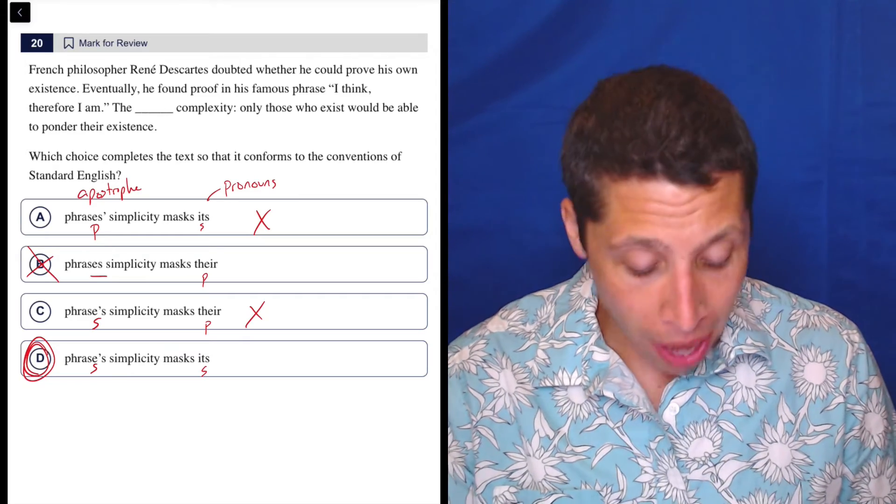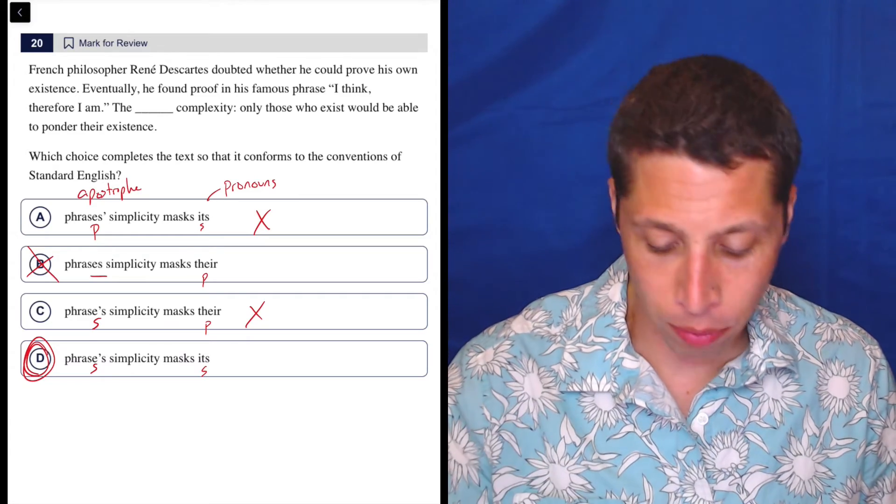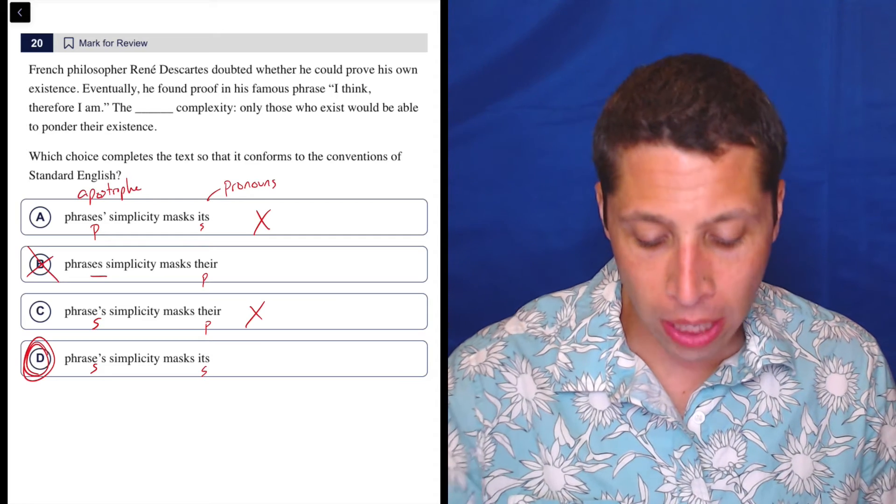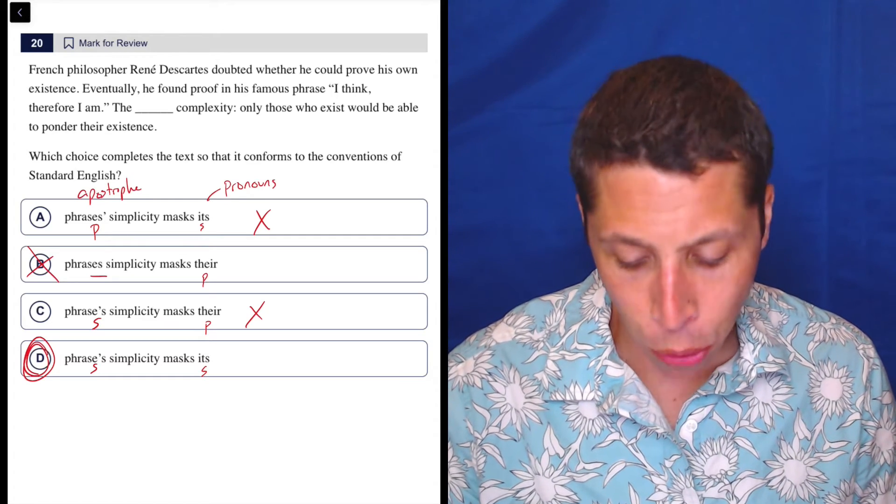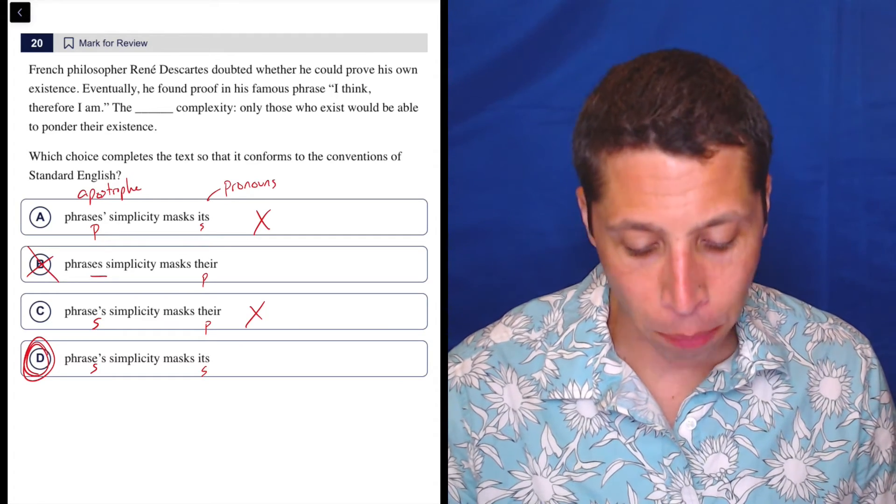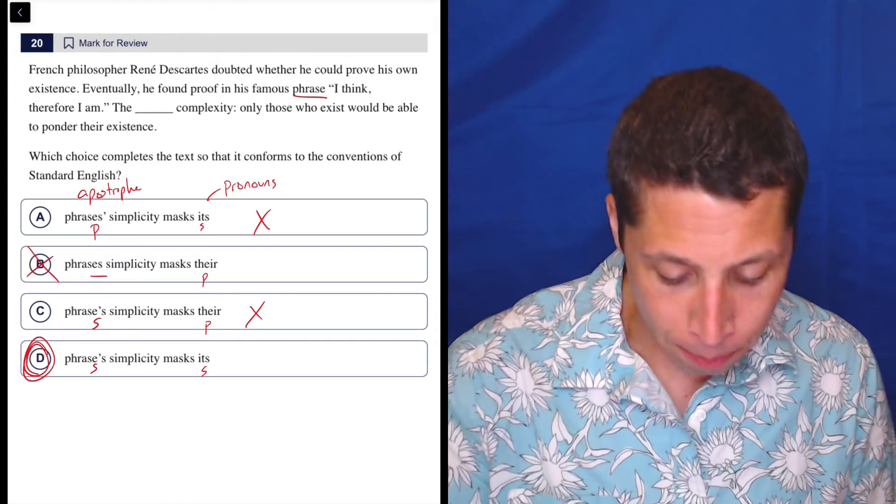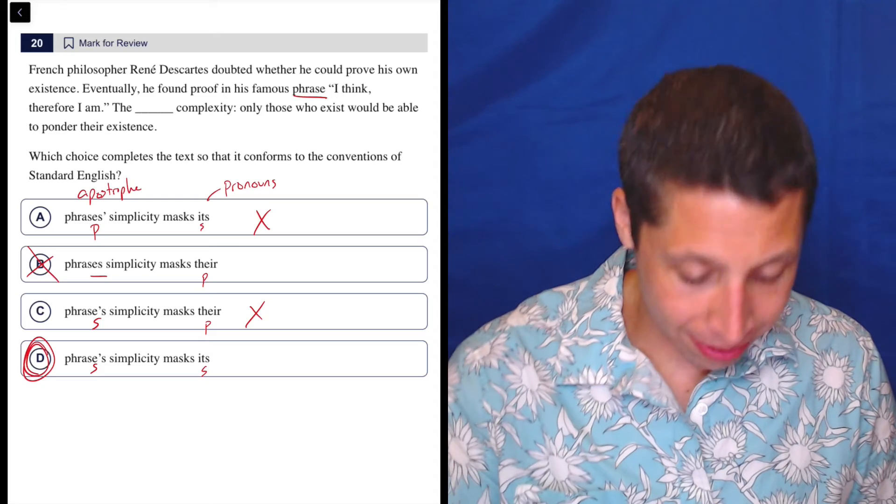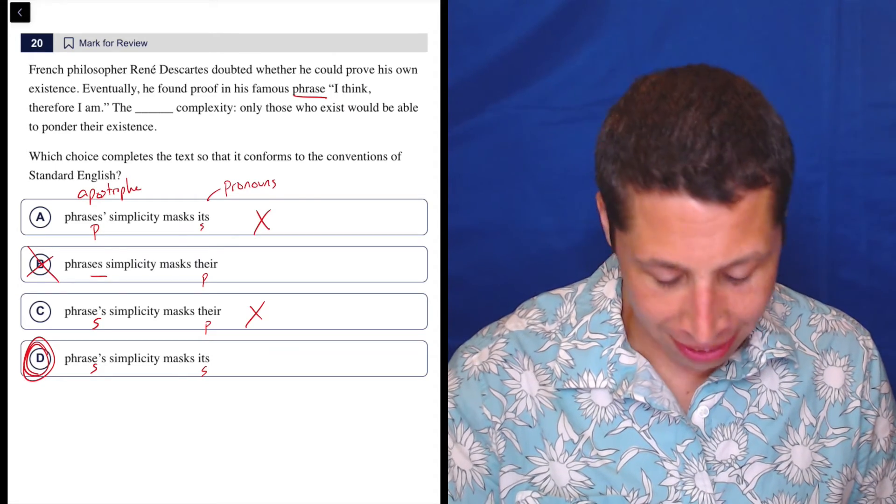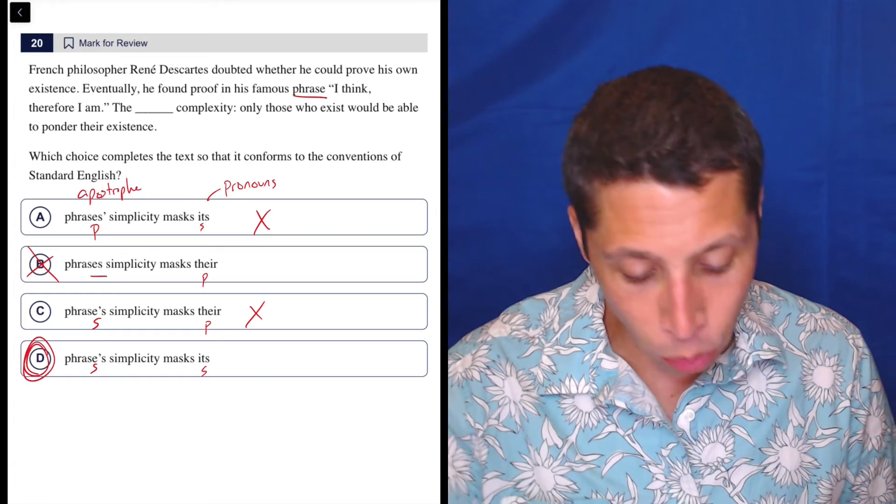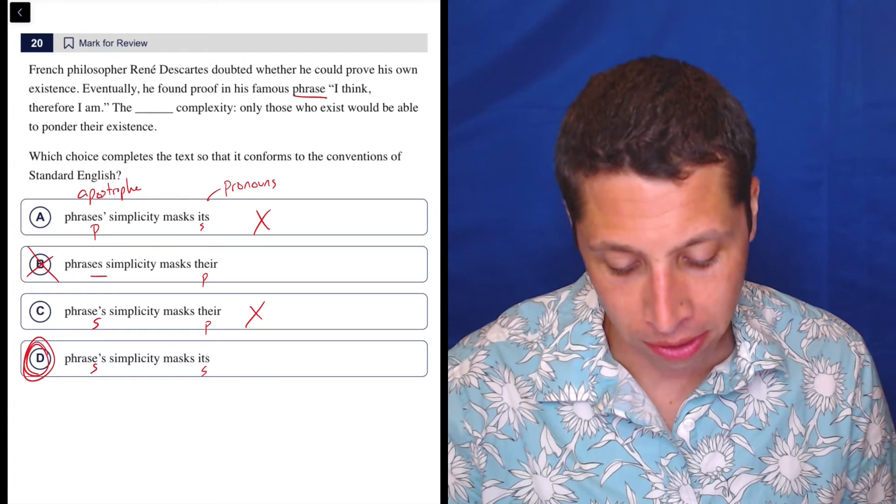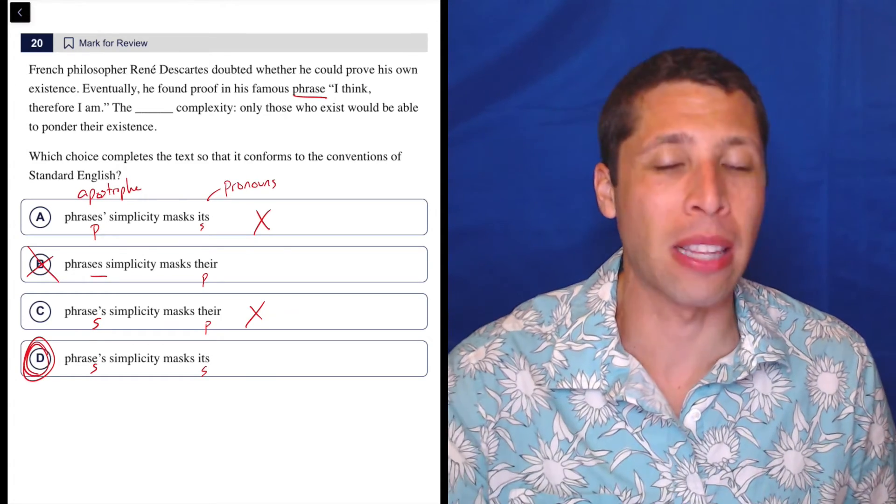We should have figured that out from context. I didn't read the rest of the sentence, but we can. French philosopher René Descartes doubted whether he could prove his own existence. Eventually, he found proof in his famous phrase: I think, therefore I am. It's one phrase. The phrase's simplicity masks its complexity. Only those who exist would be able to ponder their existence. So it's talking about one phrase.